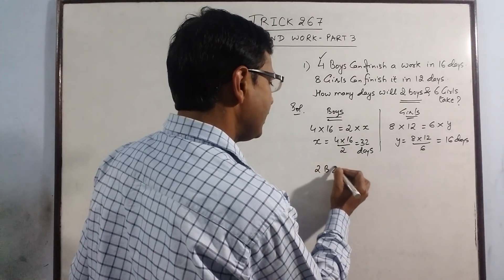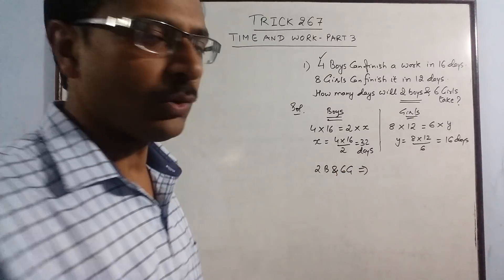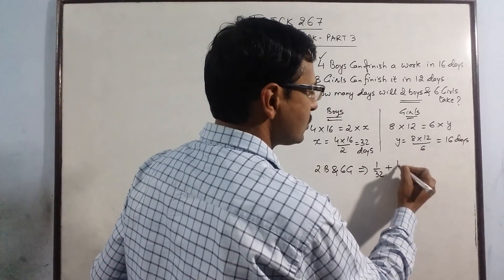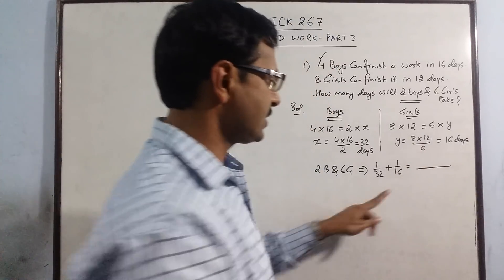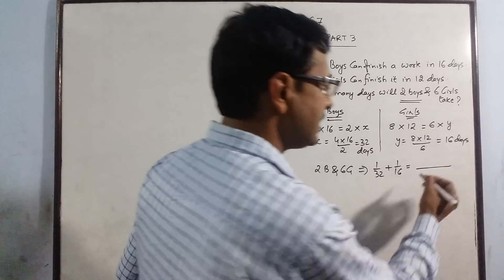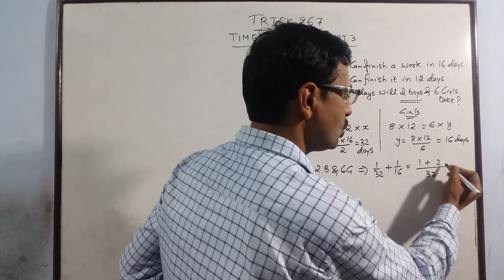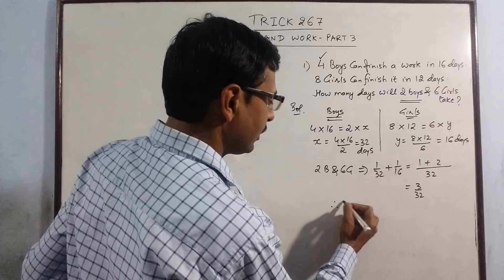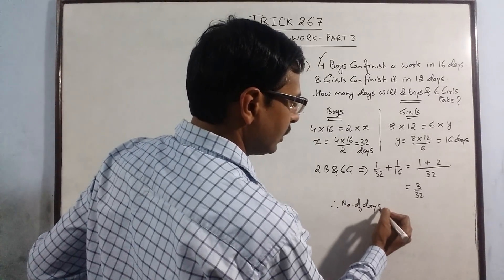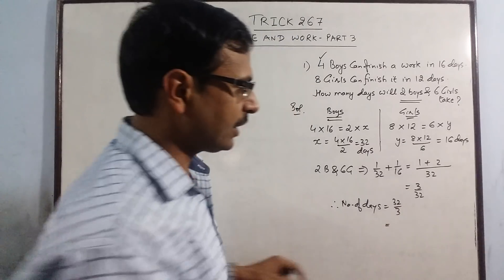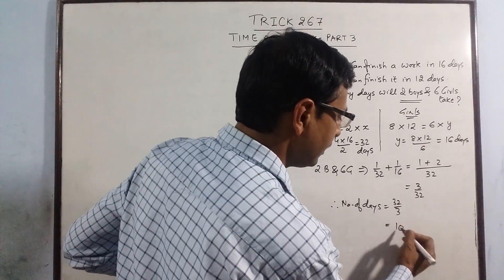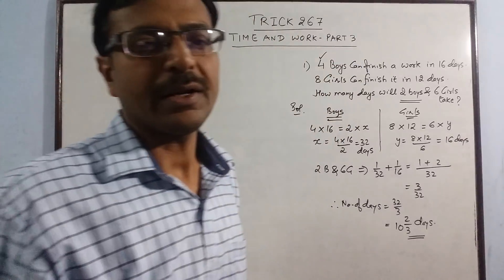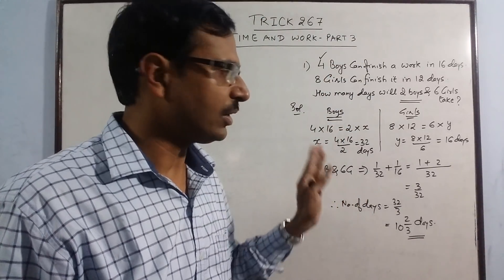Now use the reciprocal method for 2 boys and 6 girls together. We have 1/32 + 1/16. Since 16 is a factor of 32, the LCM is 32: 1 + 2 = 3, giving 3/32. Take the reciprocal: number of days = 32/3, which as a mixed fraction is 10 and 2/3 days — the correct answer for this time and work problem.